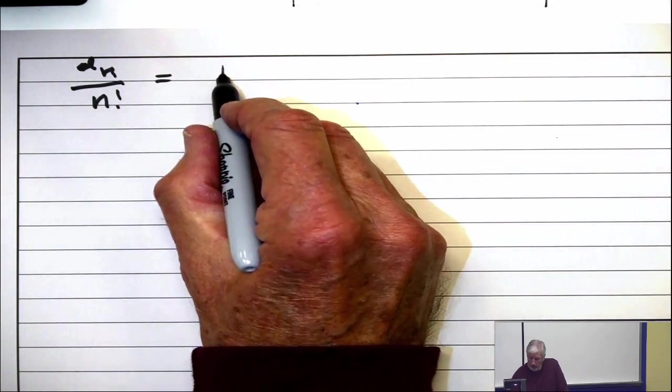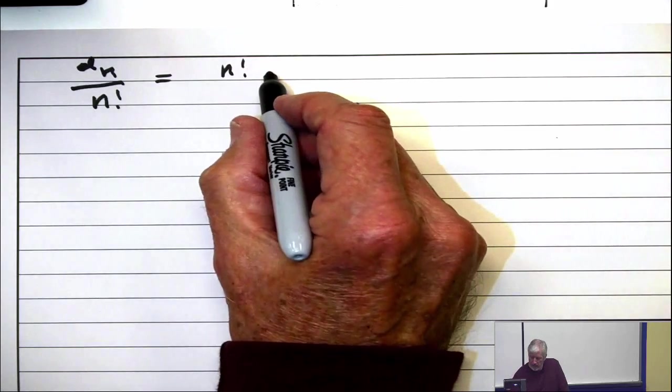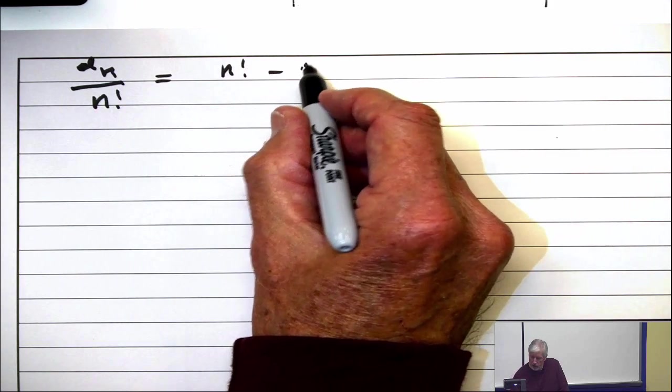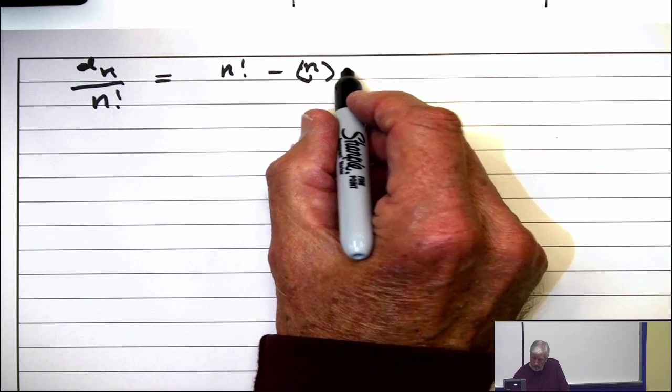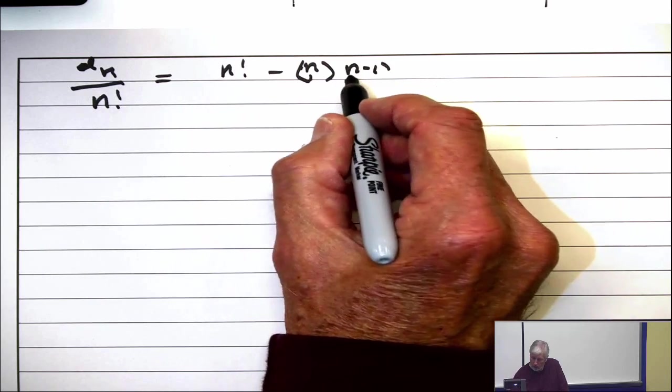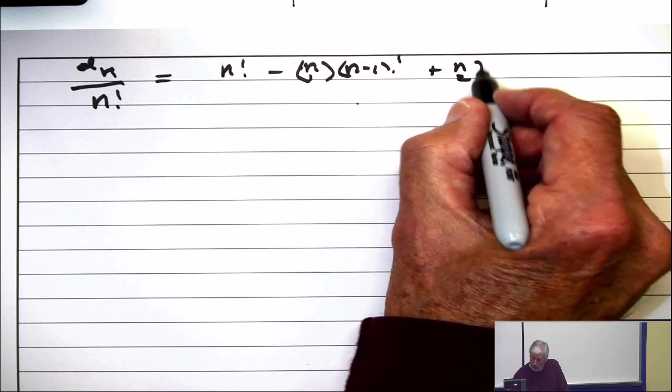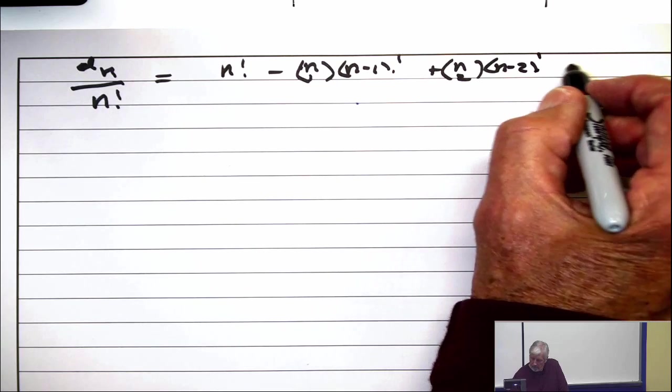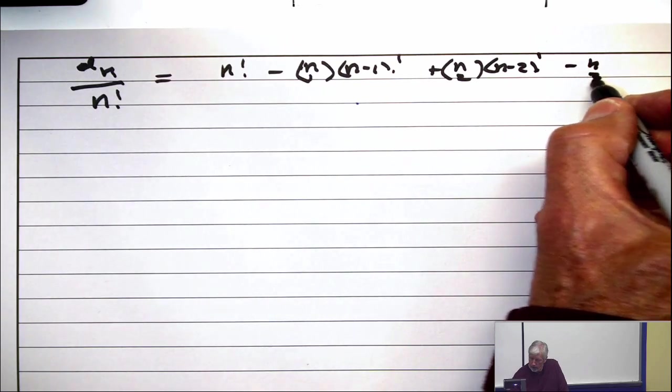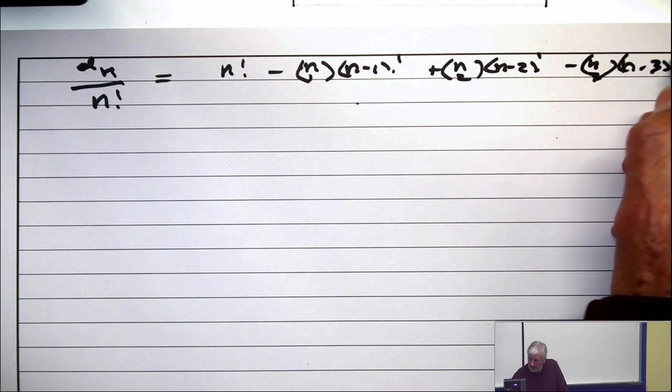It was N0, which is N factorial, minus N choose 1 times N minus 1 factorial, plus N choose 2, N minus 2 factorial, minus N choose 3 times N minus 3 factorial, etc.